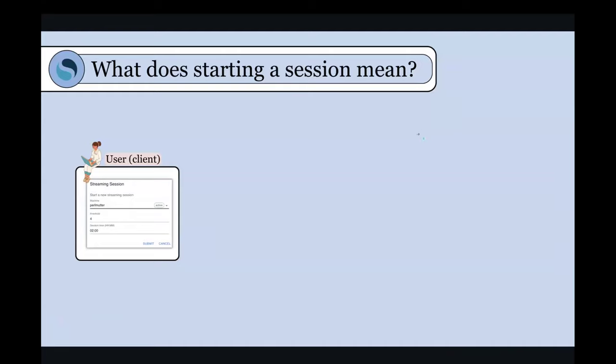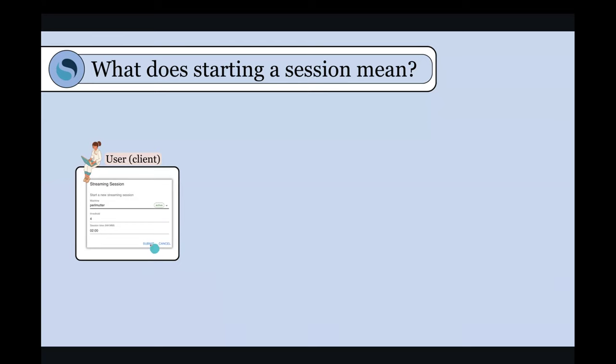So for some of you, you might be wondering what's really happening when I'm starting a session. So the user, when they click this button to start a session, they'll see this dialogue window. And you can see here that it says active. This is a machine, Perlmutter is active. If Perlmutter was degraded or down, they would also see this kind of status here. This is using what Bjorn just talked about in the super facility API to check whether Perlmutter is up or not. If it's not there, then they can't submit a job. So when they press the submit button, what's going on is it's sending a message to the distiller backend, which creates a job in the distiller database.